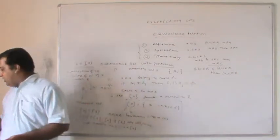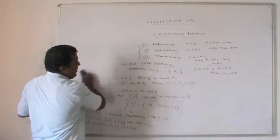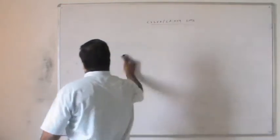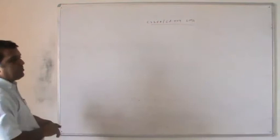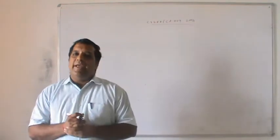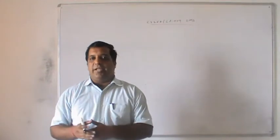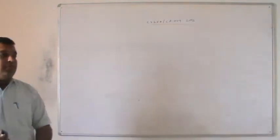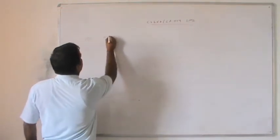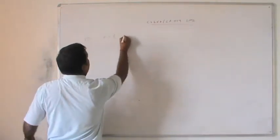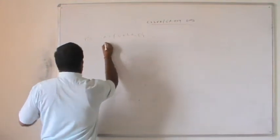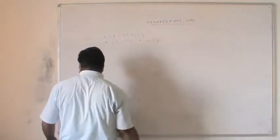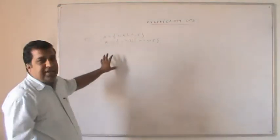We will solve problems to check whether a relation is an equivalence relation and to find the partition induced by R. Problem 1: Let set A = {1, 2, 3, 4, 5} and relation R = {(x, y) such that x + y = 5}. We want to check whether R is an equivalence relation. The ordered pairs satisfying x + y = 5 from the set are: (1,4), (2,3), (4,1), and (3,2).